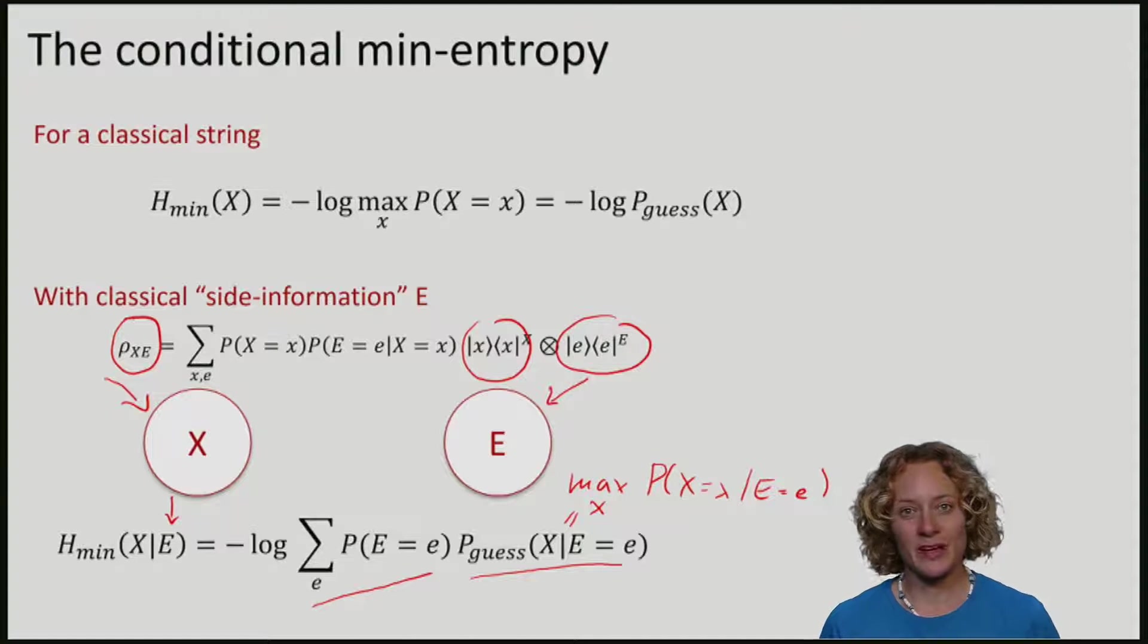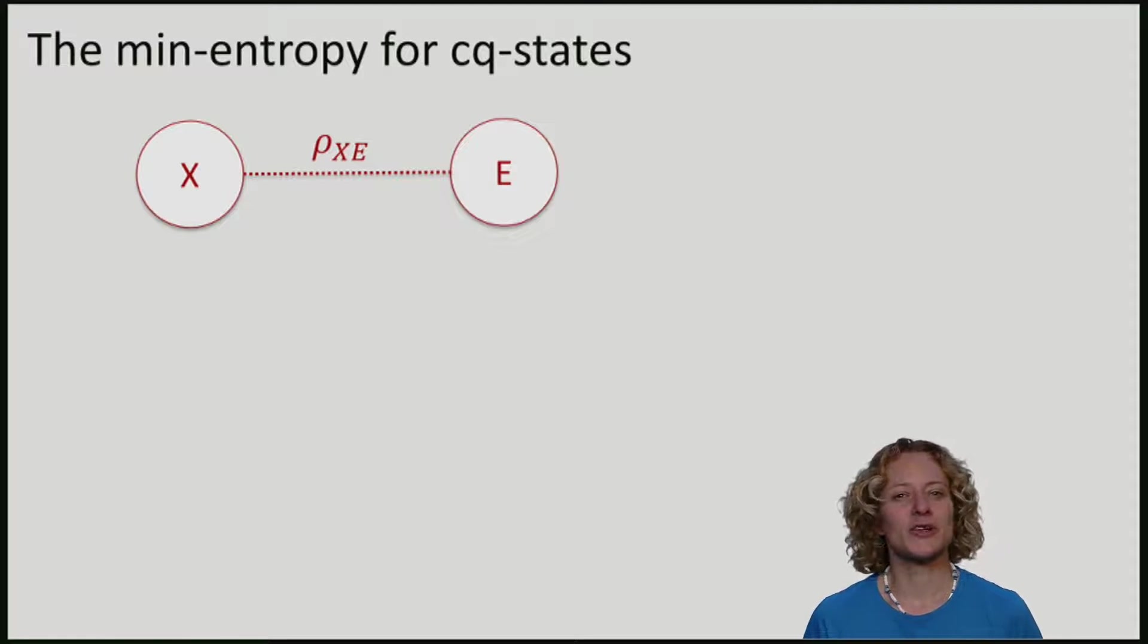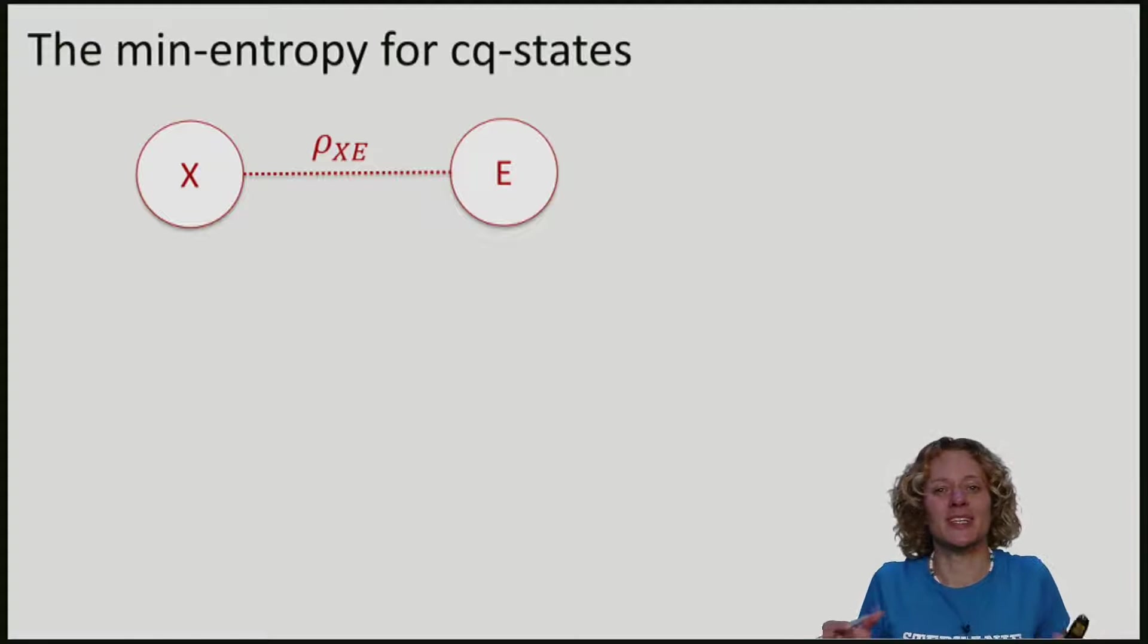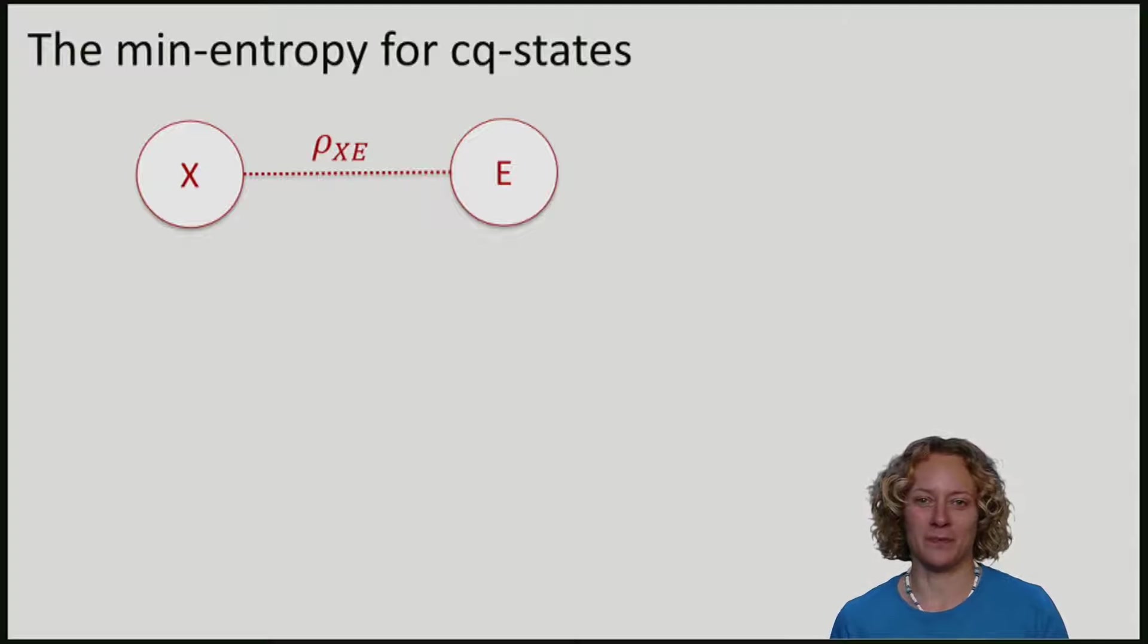Of course, we want to do quantum cryptography. So our adversary may not just have a classical register e, but it may be quantum. In fact, one can show that quantum side information e is strictly more powerful than classical side information. So we definitely have to worry about this.